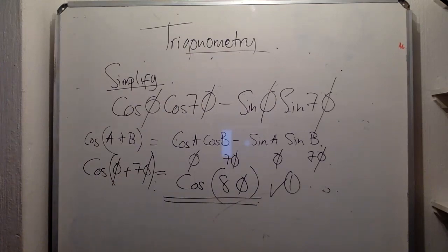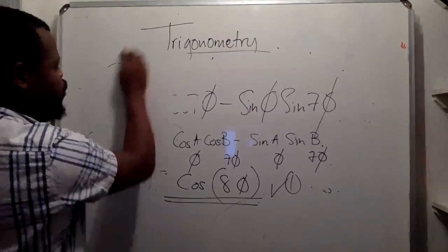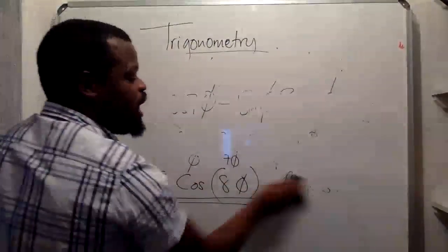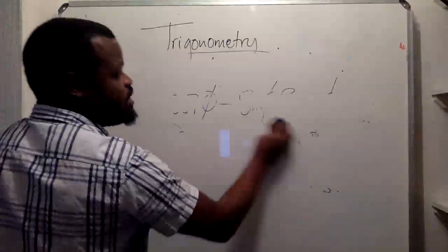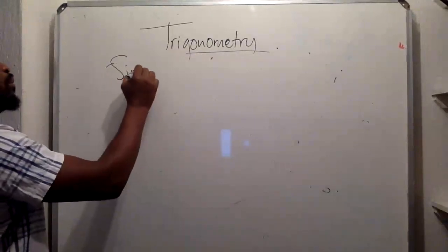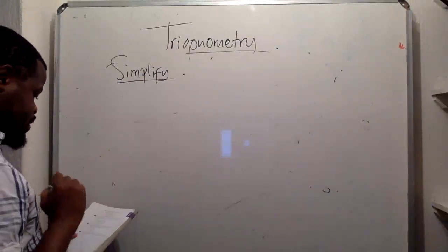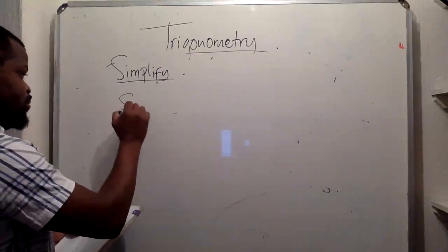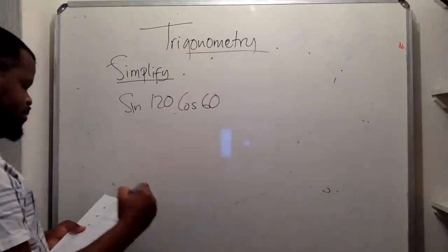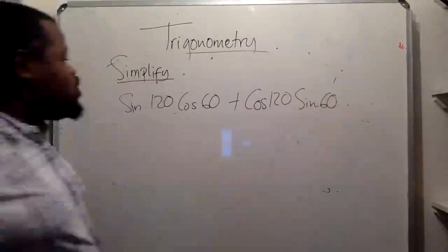Let's do another example together so you can see if you get it right. Can you quickly write the answer in the chat section? I'll give you 30 seconds after writing it down so we can see if you got it right. It says: simplify sin120·cos60 plus cos120·sin60.